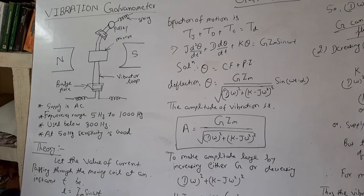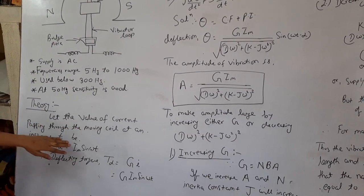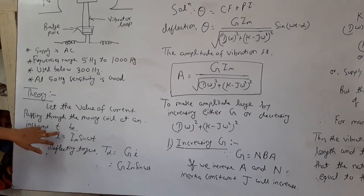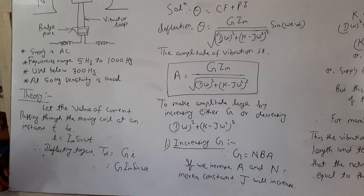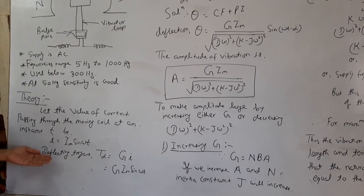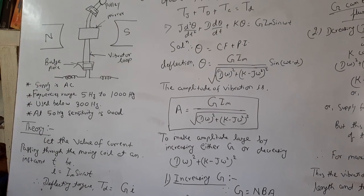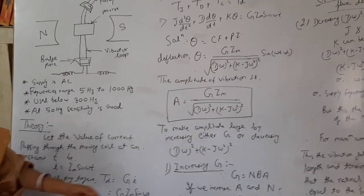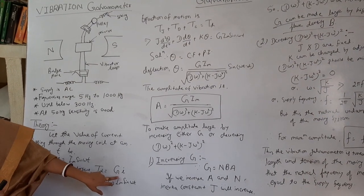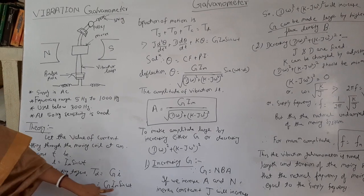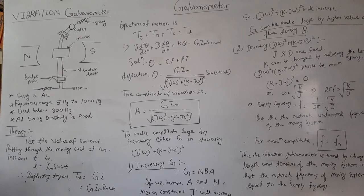So now come to the principle theory. Let the value of the current passing through the moving coil at an instant T be I_m sin(ωt). It is a sinusoidal current, as you know. So deflecting torque produced by the galvanometer is GI. I have already derived in the previous lecture. Deflection torque is equal to GI, and I is here I_m sin(ωt), and G is a galvanometer constant.